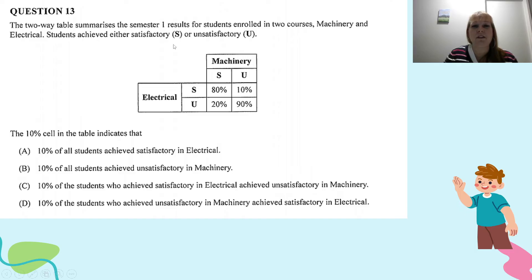10% of the students, so if we look here, who achieved satisfactory in Electrical, achieved unsatisfactory in Machinery. So the dependent variable here is how did they do in Electrical? Well, this is not how we read this table, because we're not reading across the rows. We need to think and focus on how do they do in Machinery first, and then how did they do in Electrical second.